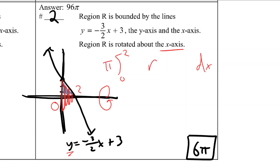So pi r squared, because we are adding up infinite number of circles. R is y, but you need these variables to match up, so instead of calling it y, you should call it negative 3 halves x plus 3.